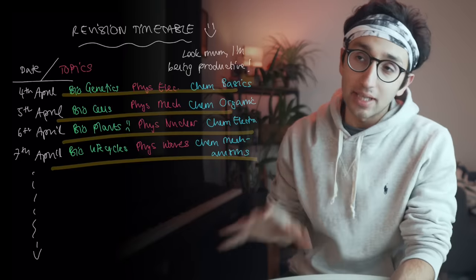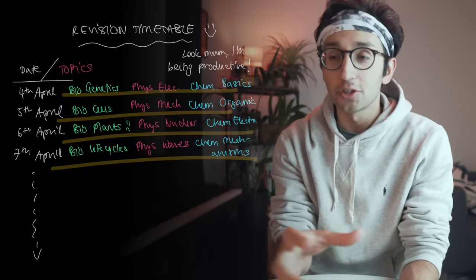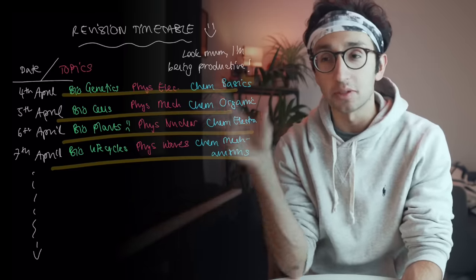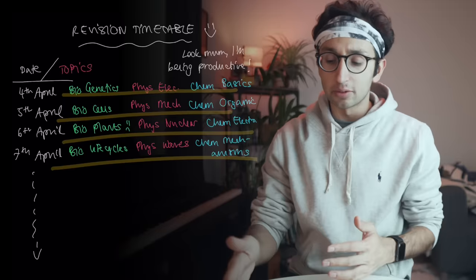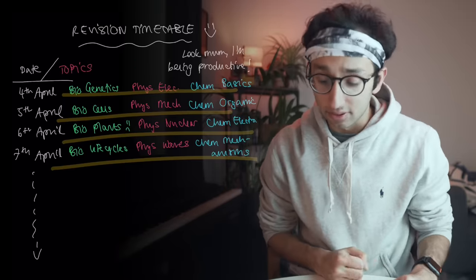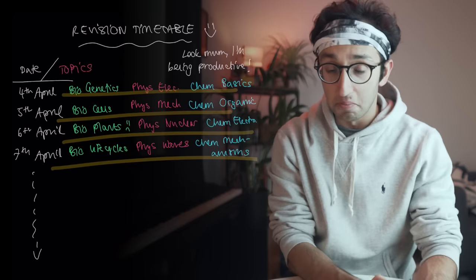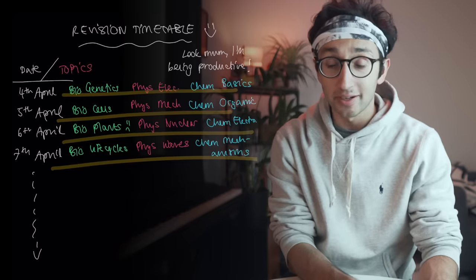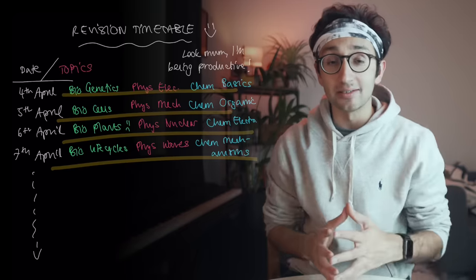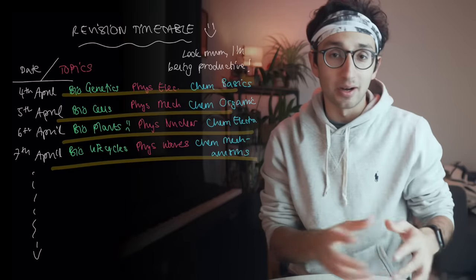Thirdly, with this standard prospective revision timetable, there's no real way of seeing how much of each subject you know. Apart from doing past papers and having your own separate record — if I were to glance down this list on the 10th of April, I can see I studied physics electricity on the 4th, but do I know the topic? Are there any other topics in physics? There's no easy way of seeing an overview of the subject and working out exactly what I need to learn.